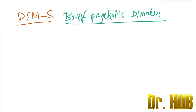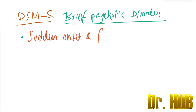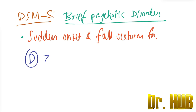Brief Psychotic Disorder includes sudden onset and full return of function. There is a sudden onset and full return to function. The duration is greater than one day and less than one month.